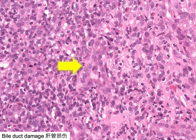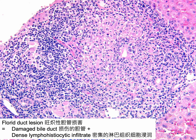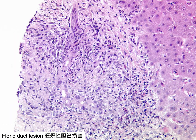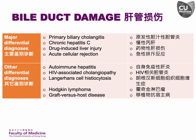An interlobular bile duct infiltrated by inflammatory cells shows varying degrees of epithelial disarray. A florid duct lesion is a damaged interlobular bile duct surrounded by dense lymphohistiocytic infiltrate and is a characteristic feature of primary biliary cholangitis (PBC). Damage of interlobular bile ducts is mainly caused by PBC, chronic hepatitis C, drug-induced liver injury, and acute cellular rejection of the liver allograft.